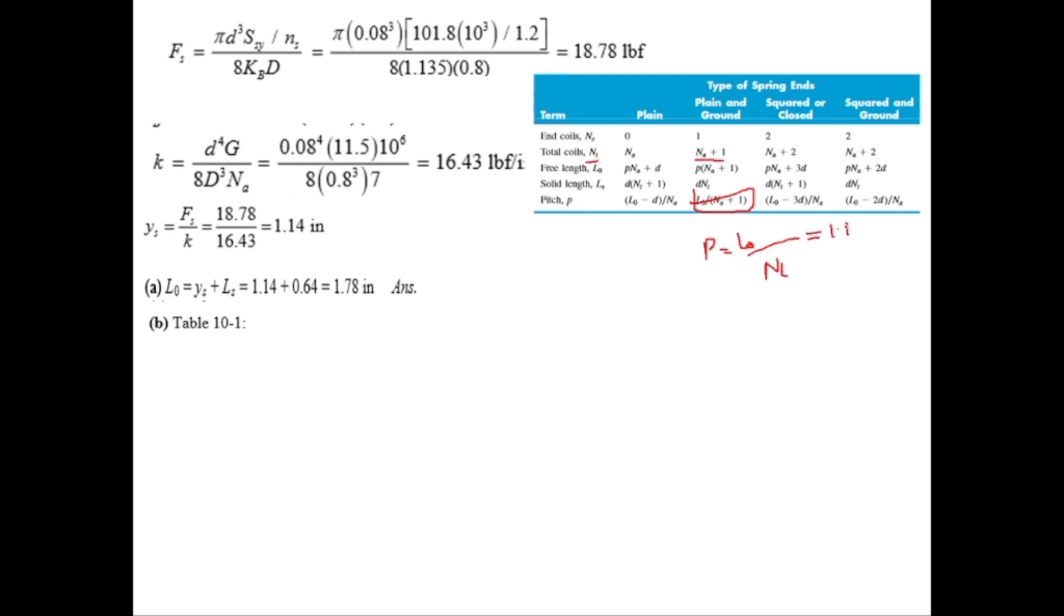So pitch is equal to L0 divided by NT. L0 is 1.78 and NT is 8 so 1.78 divided by 8 will give you P is equal to 0.223.